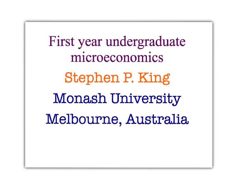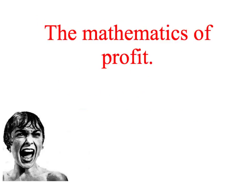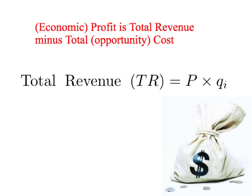Welcome back to First Year Undergraduate Microeconomics. This is our last presentation in The Mathematics of Profit. Remember that economic profit is total revenue minus total opportunity cost. In our previous presentations, we have examined what we mean by total revenue — it's the price that you sell each unit times the number of units you sell.